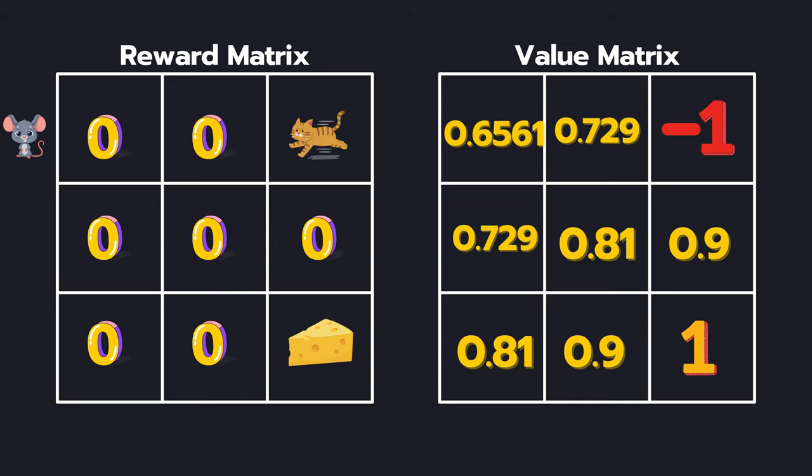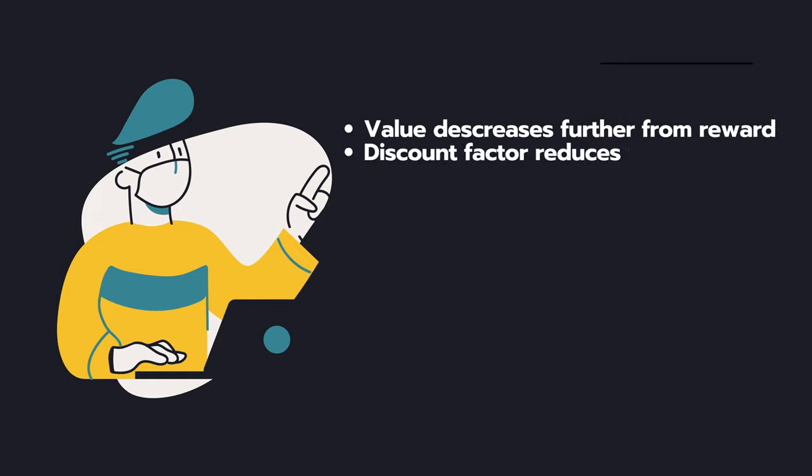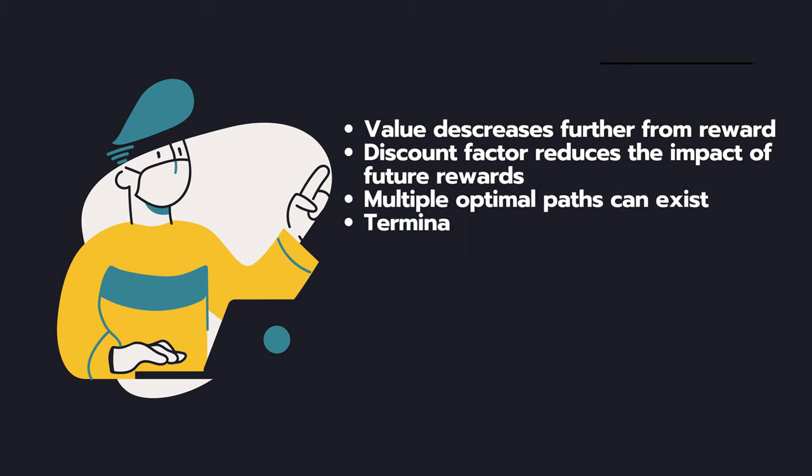Hopefully, this example was able to clarify how Bellman equation works for a deterministic environment. Now, there are some key insights. You can see that the value decreases as we get further away from positive reward. The discount factor reduces the impact of future rewards and multiple optimal paths can exist with equal values.